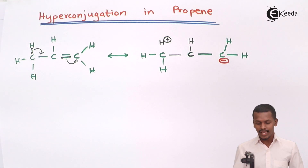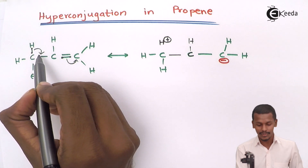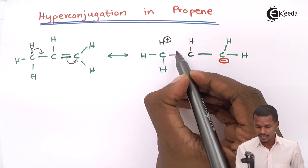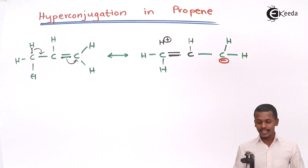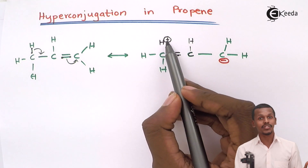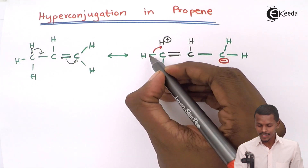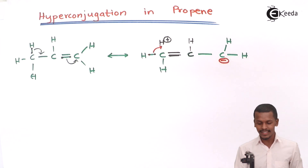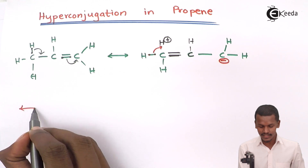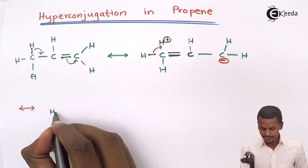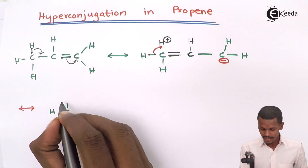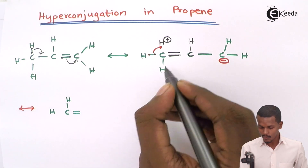This is the structure we have. The carbon-carbon double bond shifts, so there will be a double bond here. Now we have to stabilize the positive charge, so we shift these two electrons and draw a representation very similar to the earlier structure.